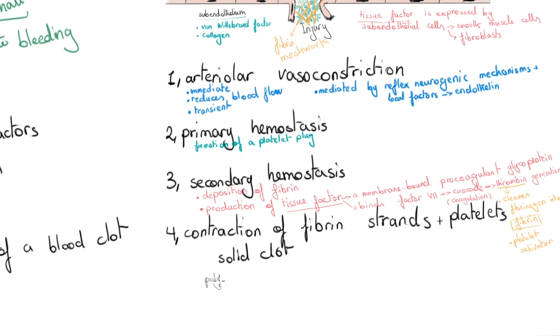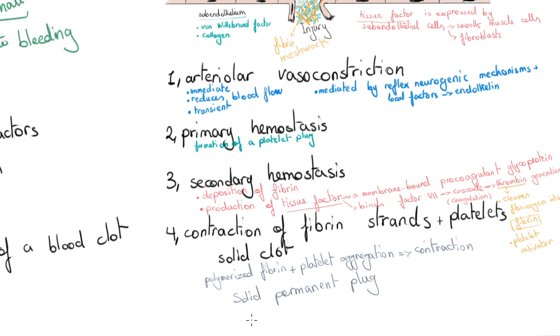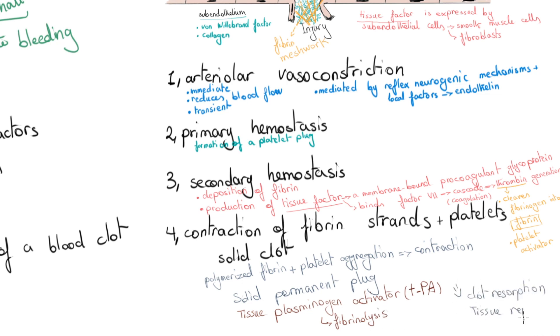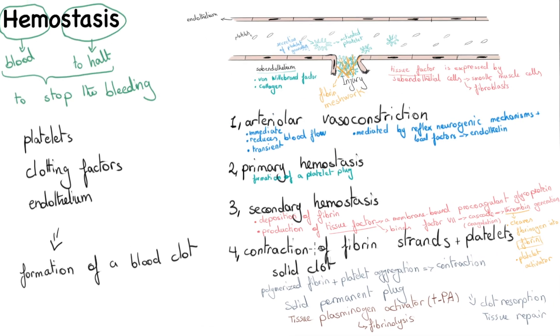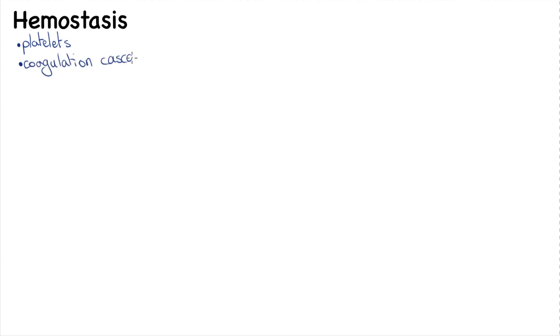The fourth step is clot stabilization and resorption. During this step, polymerized fibrin and platelet aggregation undergo contraction, forming a solid permanent plug that prevents further hemorrhage. Factors that limit clotting to the site of injury are also activated, notably tissue plasminogen activator (tPA), which is involved in fibrinolysis. These eventually lead to clot resorption and tissue repair. This overview of hemostasis is followed by a detailed look at platelets, the coagulation cascade, lab assays, thrombin, and the endothelium.